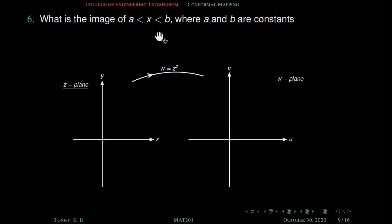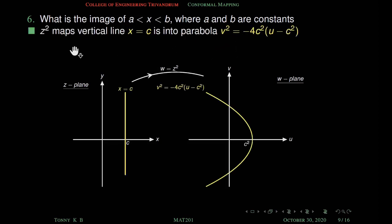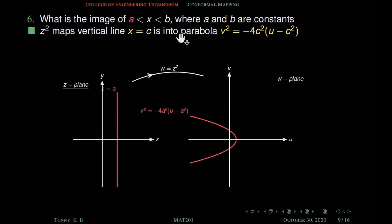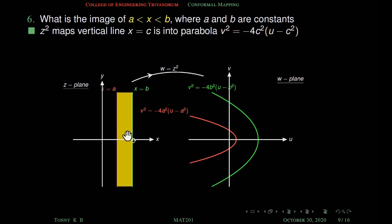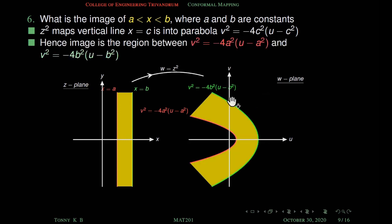Find the image of the strip a < x < b under the mapping w equal to z square. We know z square maps the vertical line x equal to c to the parabola v² equal to −4c²(u−c²). So x equal to a maps to the parabola v² equal to −4a²(u−a²) and x equal to b maps to v² equal to −4b²(u−b²). The strip a < x < b is therefore mapped onto the region between these two parabolas.